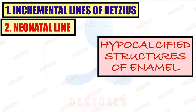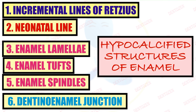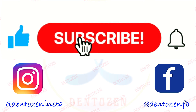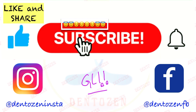So these are the hypocalcified structures of enamel: incremental lines of Retzius, neonatal line, lamellae, tufts, spindles, and dentino-enamel junction. If you get these as separate short notes, we have covered them in separate videos in detail — you can check those. If you get a long question on hypocalcified structures of enamel, you can write the answer as discussed in this video. If you enjoyed the video, tap the like button and share with your friends. Keep watching, keep learning, and keep smiling. Good luck for your exams. See you in the next video. Bye-bye.